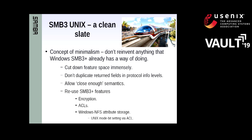SMB3 Unix — we have a clean slate. The idea is to use the concept of complete minimalism. If the existing SMB3 protocol has a way of doing something, just use it. Do not invent something new. That was the problem with the SMB1 extensions — like SMB itself which has kind of five different ways to open a file, the SMB1 POSIX extensions had like three different ways to get the timestamps on a file.